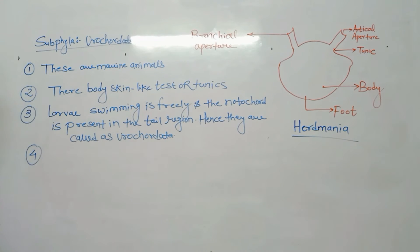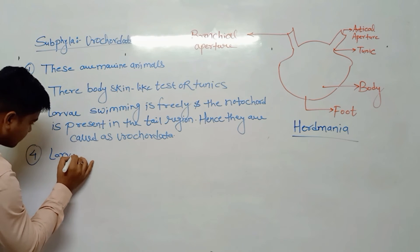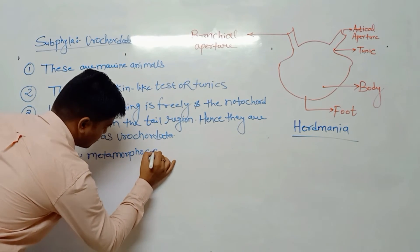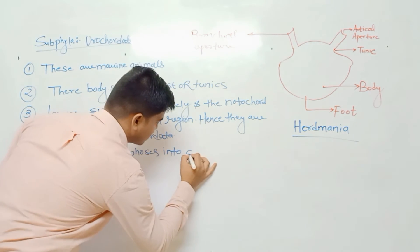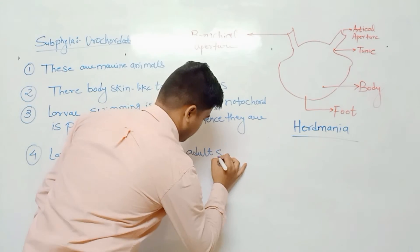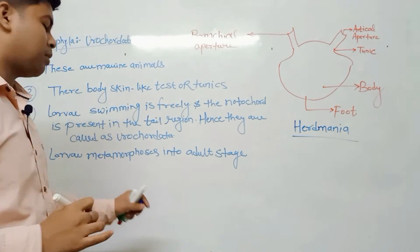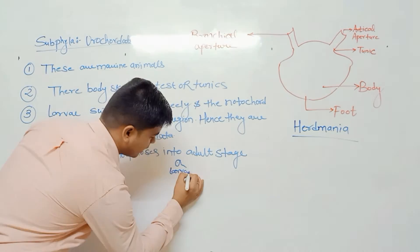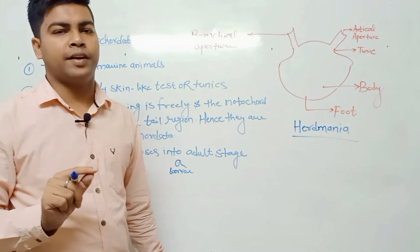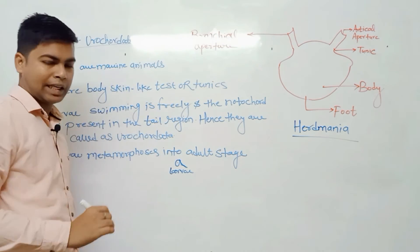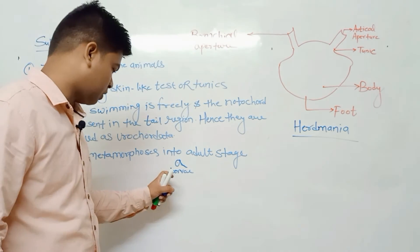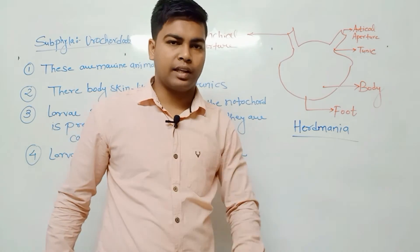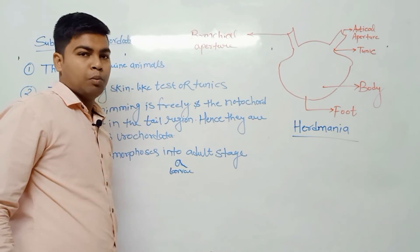Fourth character is larvae metamorphosis into adult stage. Metamorphosis - if you see the tadpoles are small, all organs are not developed. This is metamorphosis, the developmental stages of this type of body structure to form the adult stage body.